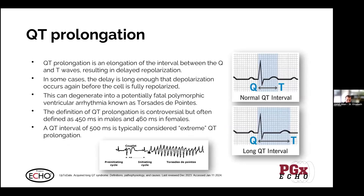One of the most common arrhythmias we see is QT prolongation — an elongation of the interval between the Q and the T wave — which results essentially in a delayed repolarization of the cell. If the repolarization cycle is too long, the signal to depolarize can arrive before the cell is fully repolarized, causing it to degenerate into potentially fatal polymorphic ventricular arrhythmias known as torsade de pointes.